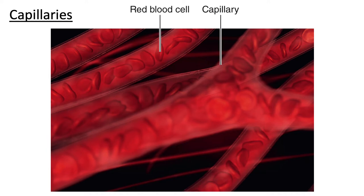The wall of the capillary consists of a single endothelial layer sitting on a basement membrane. That thin wall and the small diameter of these vessels make them optimal for exchange between the blood and the tissue fluid.